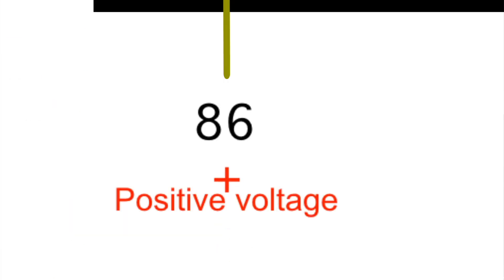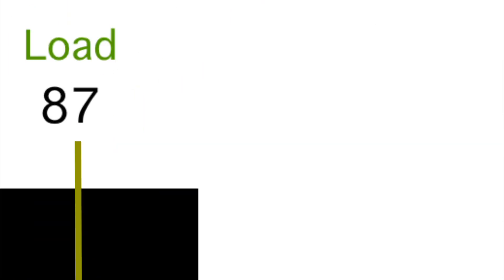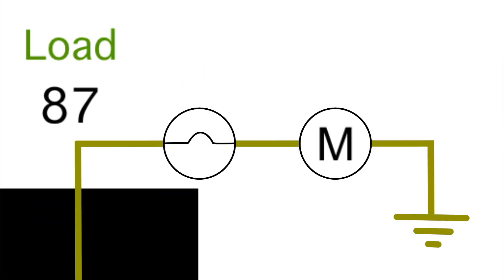That's what I was talking about at the beginning—you really have two separate circuits. Circuit 85-86 activates the relay, and the other three activate whatever your load is, whether it's a starter motor, horn, headlights, or anything along those lines.